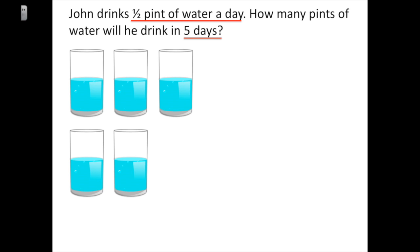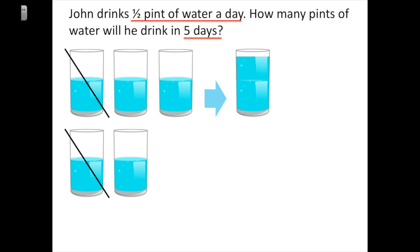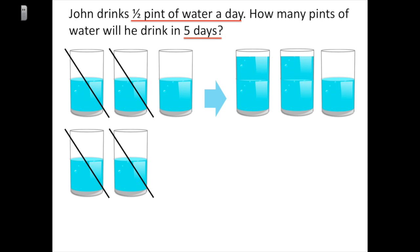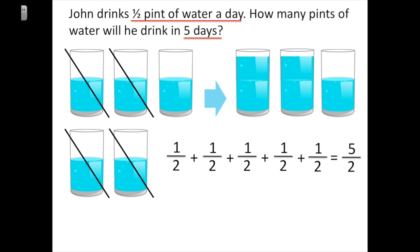If I put two half pints together, that makes one full pint. I have another two half pints to put together, making another full pint, and then I'm left over with half a pint. What I just did was add half plus half plus half plus half plus half, which equals five halves, or two and a half as a mixed number.